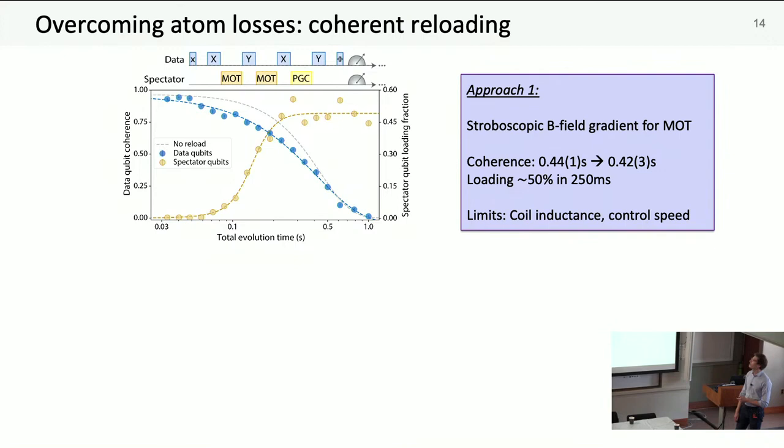First, we form a stroboscopic cesium 3D MOT whilst decoupling the data qubits. Looking at data qubit coherence time, we start coherent and over time lose that coherence with four pulses, characteristic half a second. The gray line is what happens when we don't have the 3D MOT on from field coils ringing. But if we look at the number of spectator qubits, we're actually reloading cesium atoms faster than we're losing coherence in the system.